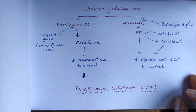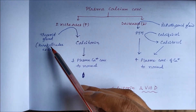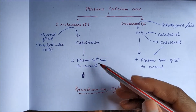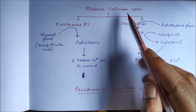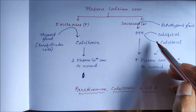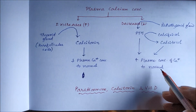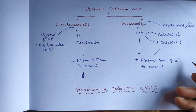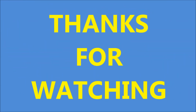To summarize: when plasma calcium concentration increases, parafollicular cells of the thyroid gland secrete calcitonin, which decreases plasma calcium to normal. When plasma calcium decreases, the parathyroid gland secretes parathyroid hormone, which converts calcifediol to calcitriol. Both parathyroid hormone and calcitriol increase plasma calcium concentration back to normal. This is the overall action of parathyroid hormone, calcitonin, and vitamin D.